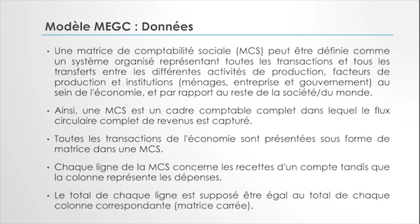Toutes les interactions, tous les flux de revenu entre les acteurs de l'économie et entre les secteurs doivent être capturés. Toutes les transactions sont représentées sous forme de matrice de comptabilité sociale. C'est comme la technique de la comptabilité à double entrée : chaque ligne de la matrice concerne les recettes d'un compte, tandis que la colonne représente les dépenses. Le total de chaque ligne est supposé être égal au total de chaque colonne correspondante, en matrice carrée. Nous reviendrons prochainement pour expliquer de manière très détaillée cette matrice de comptabilité sociale.